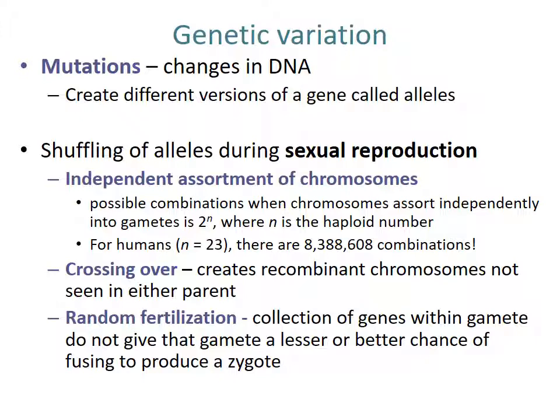That's a lot of variation, and it doesn't even take into account crossing over, which creates recombinant chromosomes not seen in either parent. Then there's random fertilization — basically, the collection of genes within a gamete doesn't give that gamete any better chance of fusing with another to produce a zygote. Not all species truly have random fertilization; sometimes some sperm are more likely to fertilize the egg than others, but that's more complicated than we'll get into right now. If you're interested, you can look up non-random fertilization.